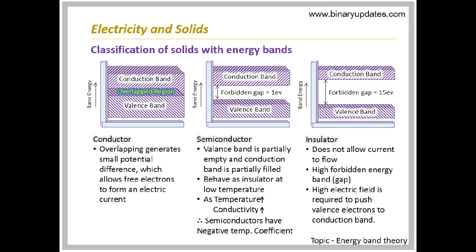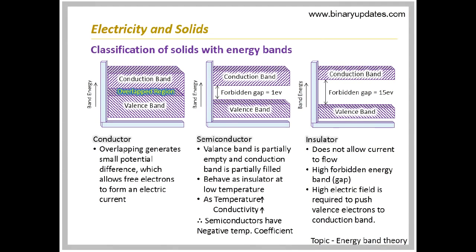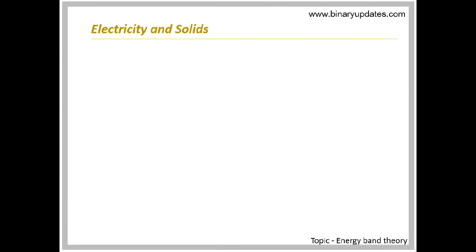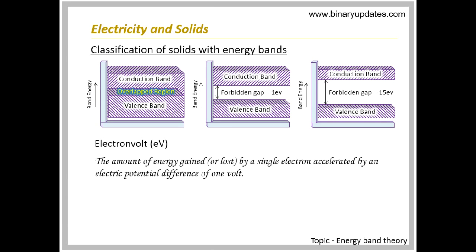In the case of insulators, as there is no conductivity, the forbidden gap is much higher compared to semiconductors. The forbidden gap is measured with a unit called electron volt. It is also the energy of an electron measured in eV, which is equivalent to 1.602 × 10⁻¹⁹ joules.